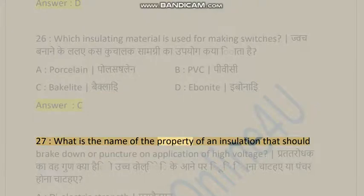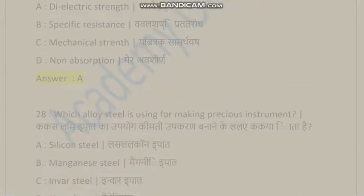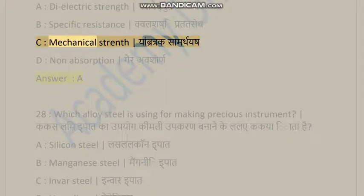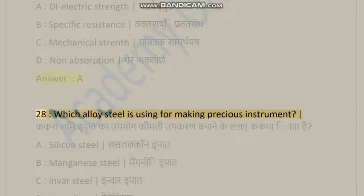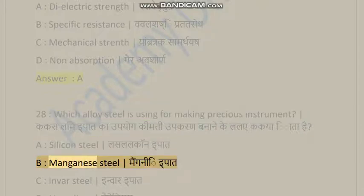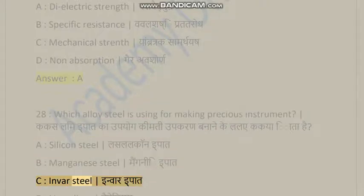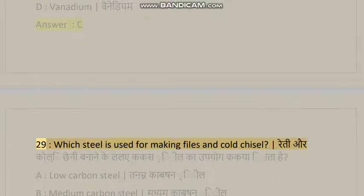Question 26: Which insulating material is used for making switches? A) Porcelain, B) PVC, C) Bakelite, D) Ebonite. Answer is C. Question 27: What is the name of the property of an insulation that should break down or puncture on application of high voltage? A) Dielectric strength, B) Specific resistance, C) Mechanical strength, D) Non-absorption. Answer is A. Question 28: Which alloy steel is used for making precision instruments? A) Silicon steel, B) Manganese steel, C) Invar steel, D) Vanadium. Answer is C.